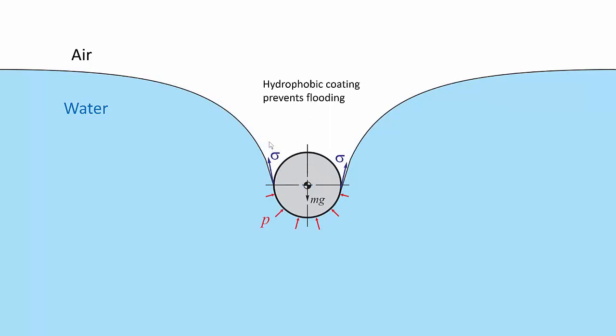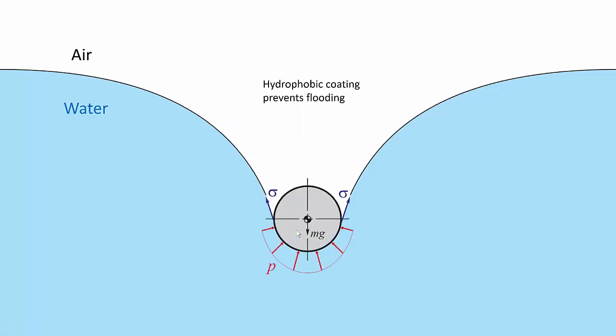As the ring continues to sink, the hydrostatic pressure on the lower surface of the ring increases. It increases linearly with depth.